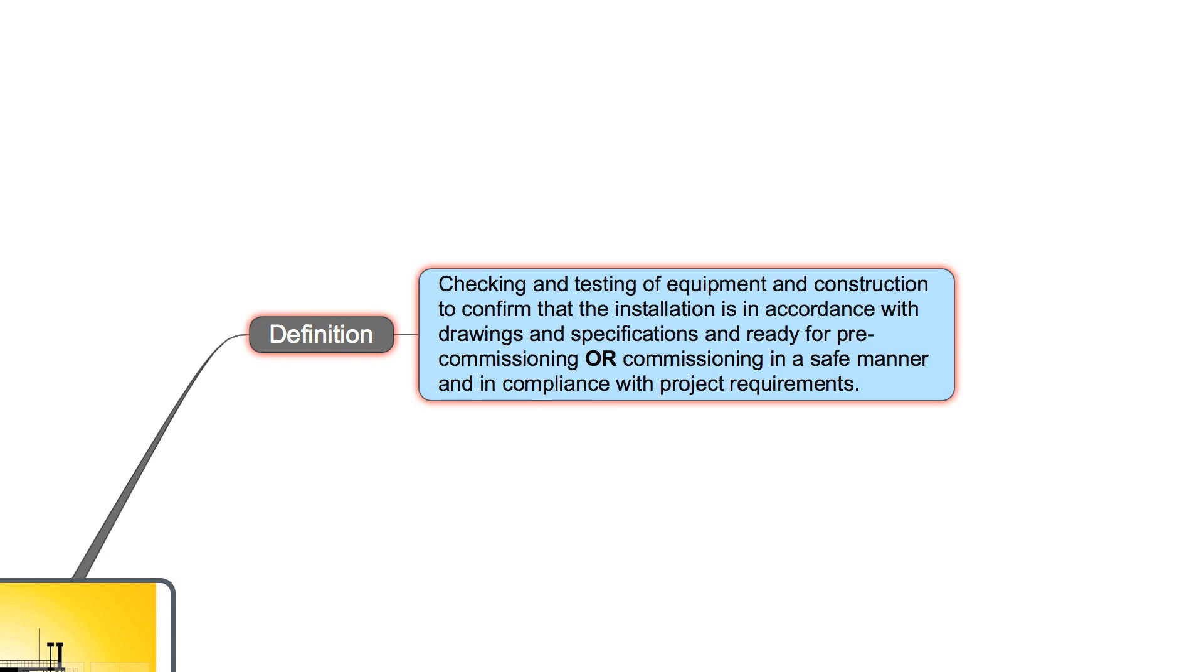I want to give you at first the definition for mechanical completion. Checking and testing of equipment and construction to confirm that the installation is in accordance with drawings and specifications and ready for pre-commissioning or commissioning in a safe manner and in compliance with project requirements. I put the OR in capitals and I marked it bold because mechanical completion can mean ready for pre-commissioning or it can mean ready for commissioning. I will explain this in a little bit more detail later.